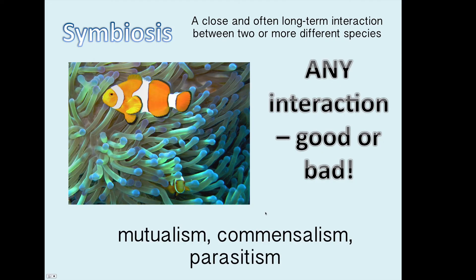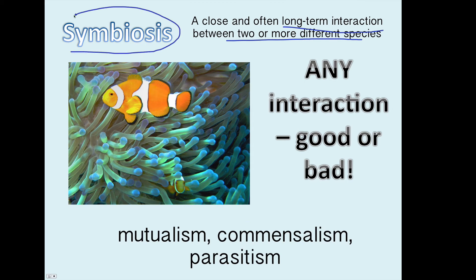The broadest type of interaction is called symbiosis, which is any long-term interaction between two different species. It could be good or bad. A classic example of symbiosis is the sea anemone and the clownfish. There are three types of symbiosis: mutualism, commensalism, and parasitism. Symbiosis is the overall vocabulary word, and then there are three types within it.